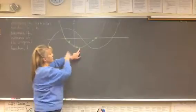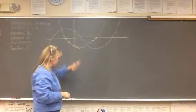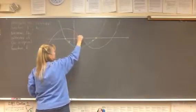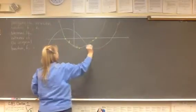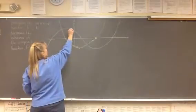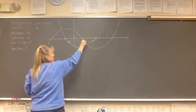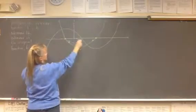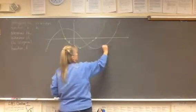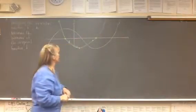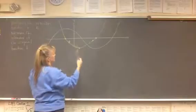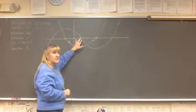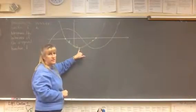Somewhere down here, where we have a minimum value on my first derivative graph, has to be where the slopes of the original function are changing from decreasing to increasing. As the slopes of the tangent lines are decreasing and then turn around and start to increase again, that means the original function switches concavity. Slopes of the tangent lines decreasing means the original function is concave down; slopes increasing means the original function is concave up. This minimum of f prime marks an inflection point on the original function f.